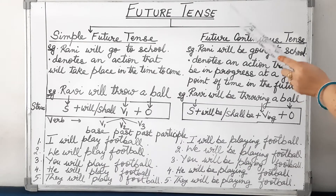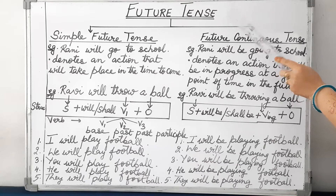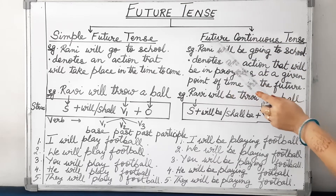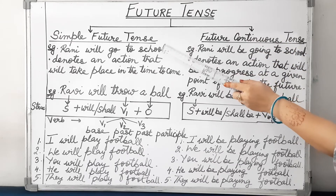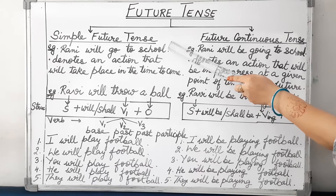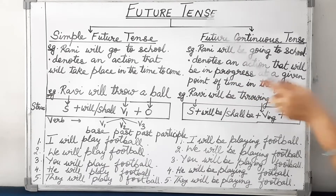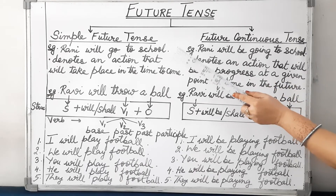Hello children, today we are doing future tense and I will explain two types of future tense: simple future tense and future continuous tense. So let's begin with the help of an example.